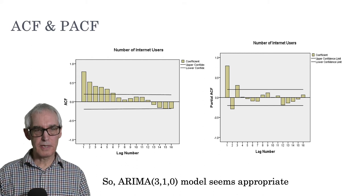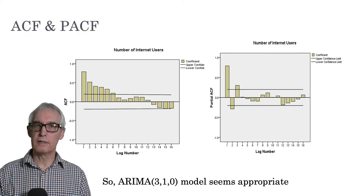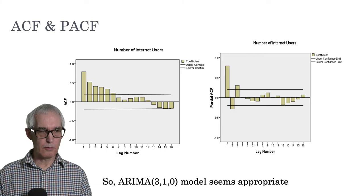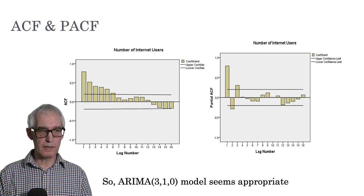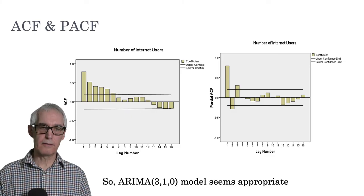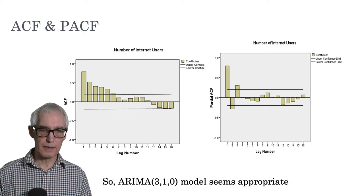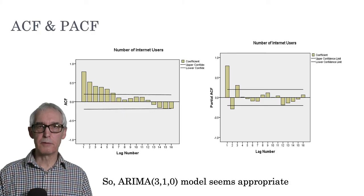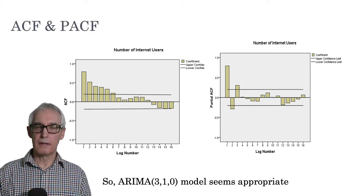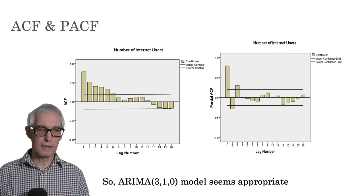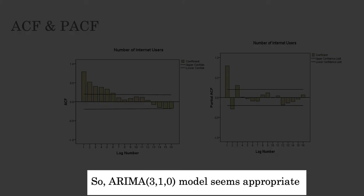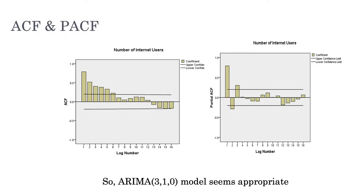You could also note that the PACF is declining quickly to zero by lag four, leaving perhaps four or five significant correlations on the ACF, but an AR(3) model is most likely appropriate. Since this data is the first difference — we had to difference once to get stationarity — what seems appropriate is an ARIMA(3,1,0) model: three being the autoregressive order, one because we differenced once, and zero because we're not including any moving average elements.